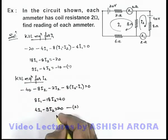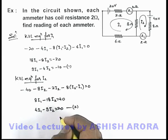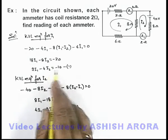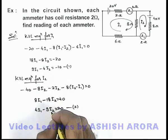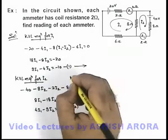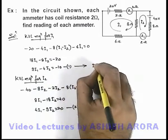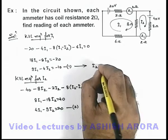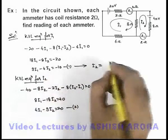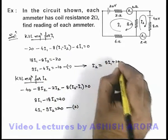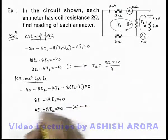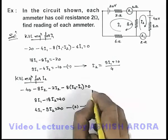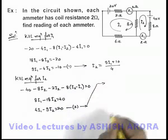Now solving equation 1 and 2 we can easily get the values of i1 and i2. In this situation from the first equation we can find out the value of i2, and substitute it into the second equation. From equation 1, the value of i2 we're getting is: i2 = (9i1 + 10) divided by 4. If we substitute this value of i2 in the second equation...